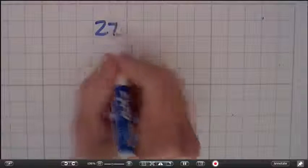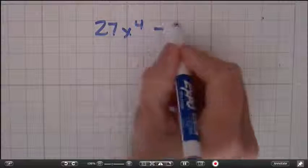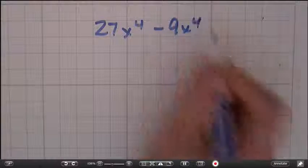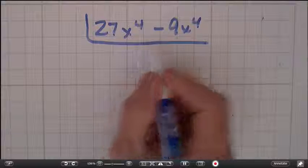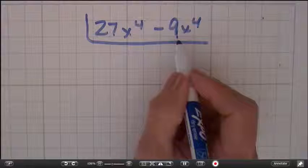Let's do two more problems and we'll call it a day. We have 27x to the 4th minus 9x to the 4th. Alright, so far so good. When I see 27 and 9, I hope you think it too. I automatically think of 3. 3 will work.